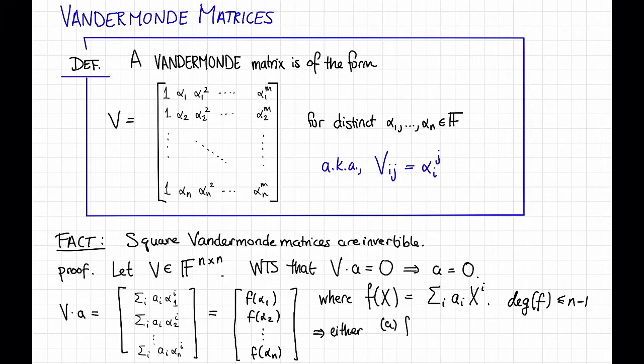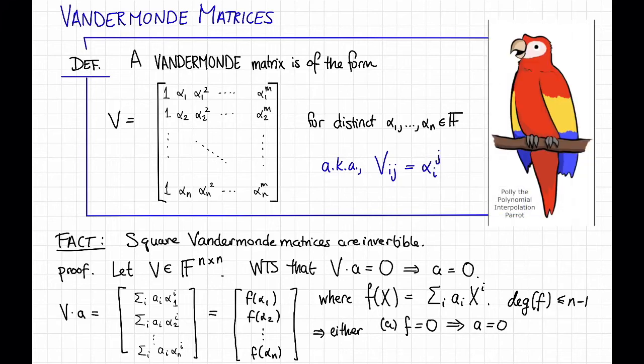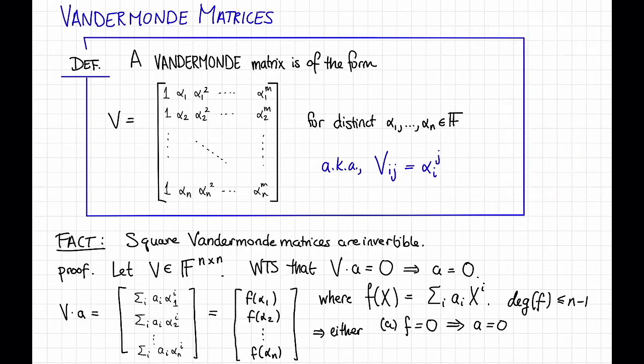This implies one of two things happen. Either F is the 0 polynomial, which implies that A itself is equal to 0, or F is a non-zero low-degree polynomial. Right! Low-degree polynomials don't have too many roots. Thanks, Polly. So since low-degree polynomials don't have too many roots, that would imply that F(x) has strictly less than n roots, and that implies that V*A is not the 0 vector, because V*A consists of n polynomial evaluations, and strictly less than n of them can be 0. Thus, either A equals 0, or V*A is not equal to 0, and that's what we wanted to show.